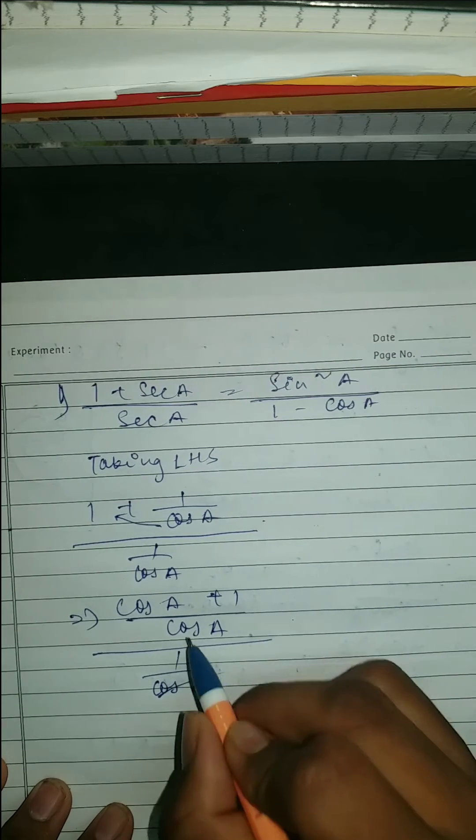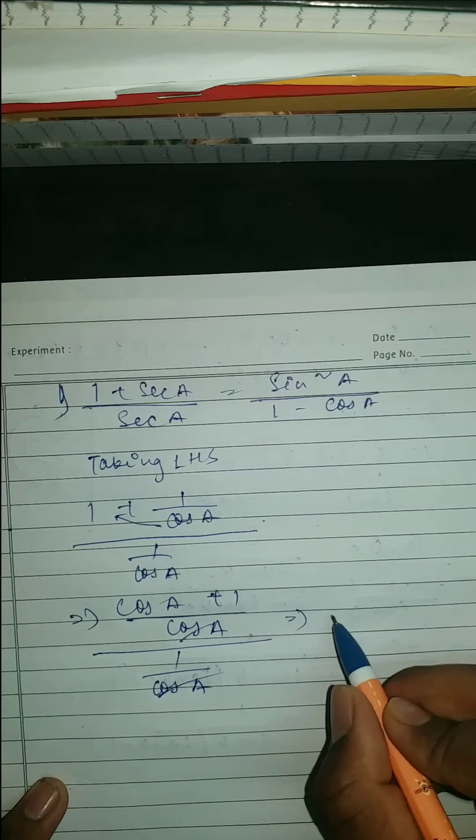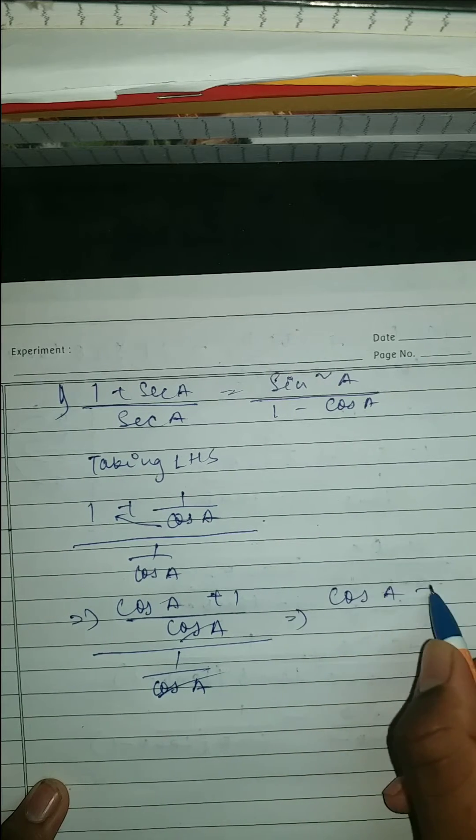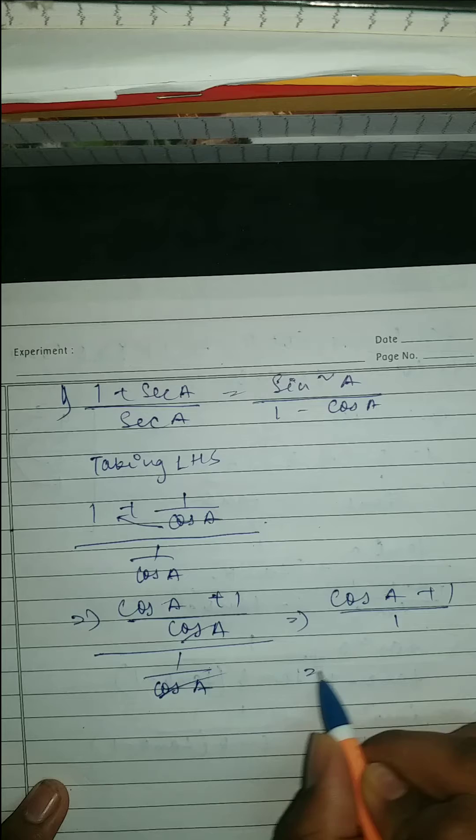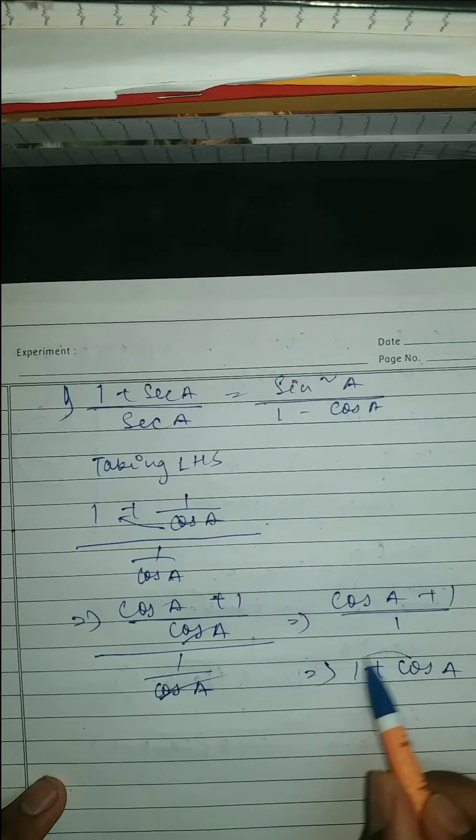Now this and this will cancel. So what we got here, let me write it here, cos A plus 1 upon 1 which you can write also 1 plus cos A. So we got right here.